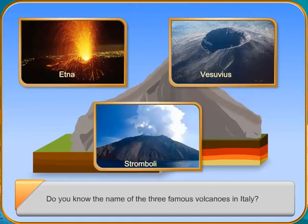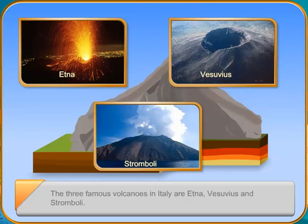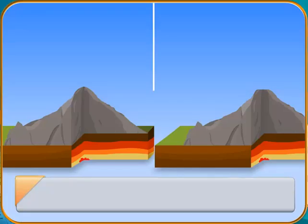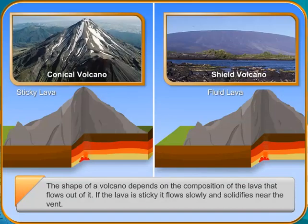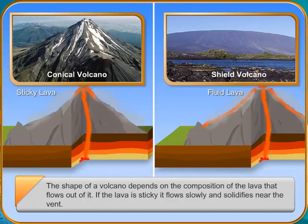The shape of a volcano depends on the composition of the lava that flows out of it. If the lava is sticky, it flows slowly and solidifies near the vent. If the lava is fluid, it spreads quickly and the cone is almost flat, forming a shield or dome.